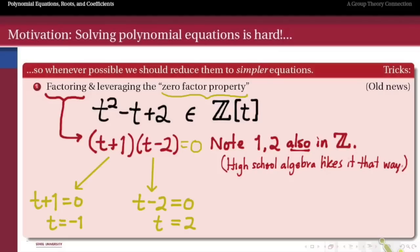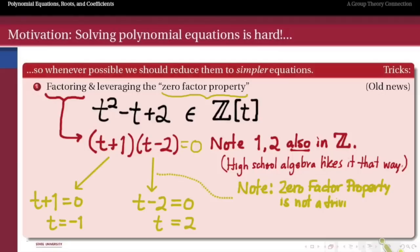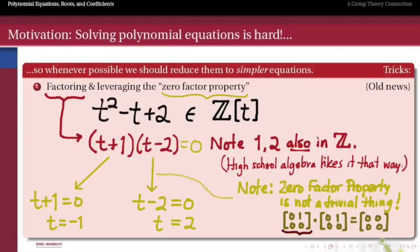The zero factor property seems obvious in the real number system because the product of two non-zero real numbers is always non-zero. But this is a property we can't always take for granted — it's not trivial. It doesn't always exist in a given number system if that system is not the reals. For instance, if our elements are two-by-two matrices, here's an example of two non-zero matrices whose product is the zero matrix. So the zero factor property holds in what we'll call the field of real numbers, but it's not a universal principle.